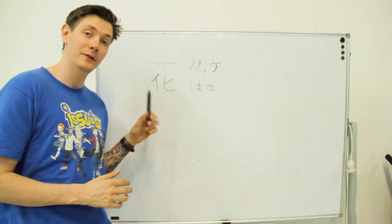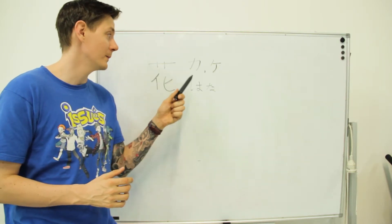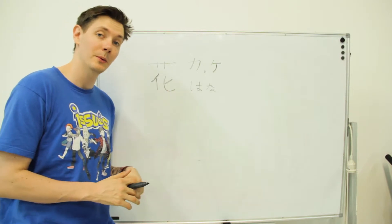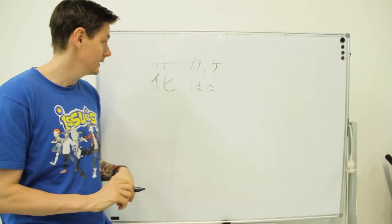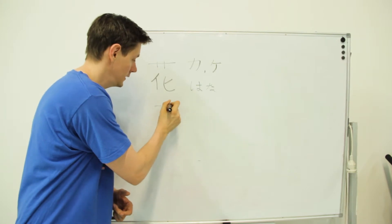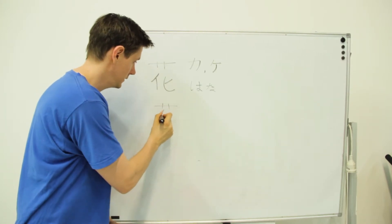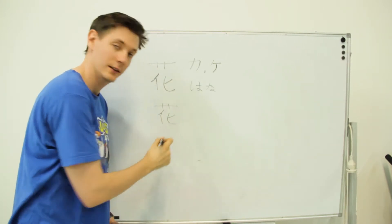The next kanji you see here is the kanji for flower. The onyomi reading is ka or ke and the kunyomi reading is hana, meaning flower. To draw it, it's quite simple. Draw a line, two lines down, person and spoon.